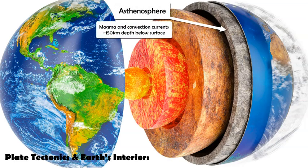Our planet's interior has a layer called the asthenosphere — a semi-molten, semi-solid layer about 150 kilometers down where a lot of the magma is generated, which can form convection currents in the upper mantle and form a kind of conveyor belt over which the rigid, cold lithospheric plates move as a result of these convection currents.